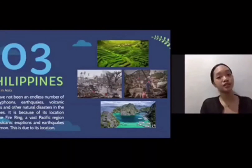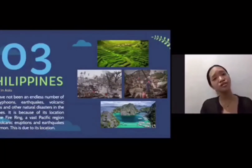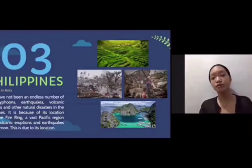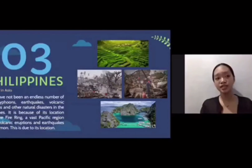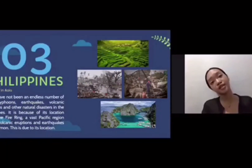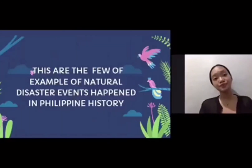The third one is the Philippines, which is our country — a country in Asia. It is also prone to geological hazards, as we can see there have been an endless number of fatal typhoons, earthquakes, and volcanic eruptions and other natural disasters in the Philippines. You can see in the pictures the tourist spots in the Philippines — the Banaue Rice Terraces and also beaches in Coron, Palawan. These are a few examples of natural disaster events that happened in Philippine history.